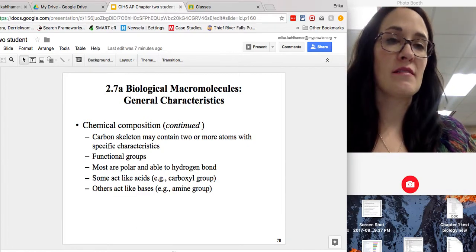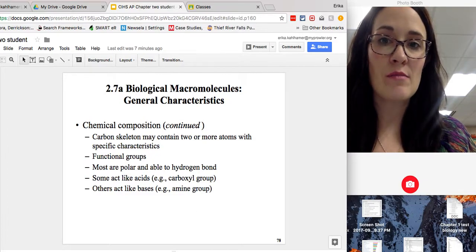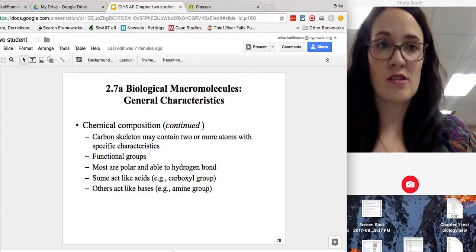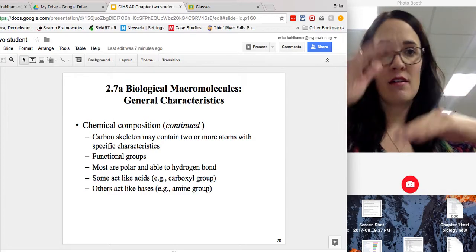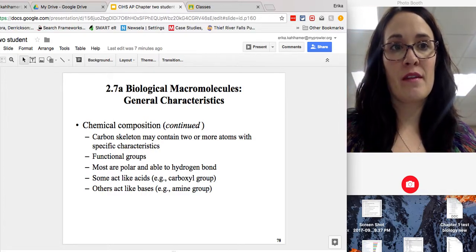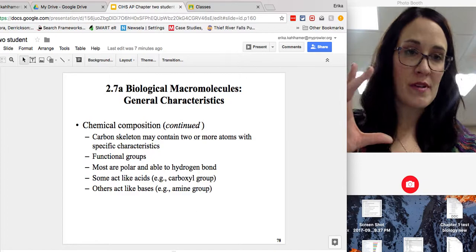Carbon skeleton contains two or more atoms. It has specific characteristics. So we're talking carbon chain, carbon ring, with usually hydrogen. That's the carbon skeleton.